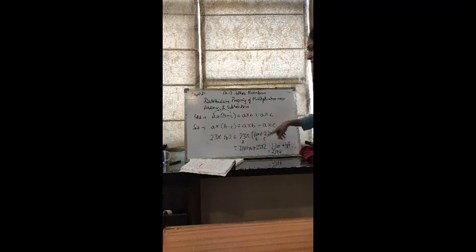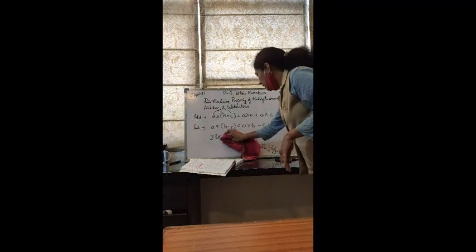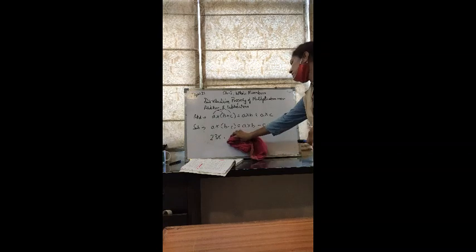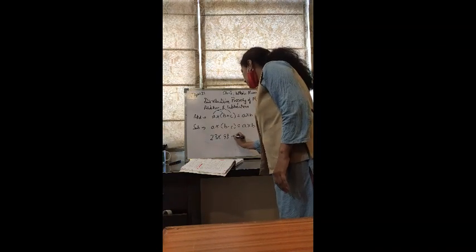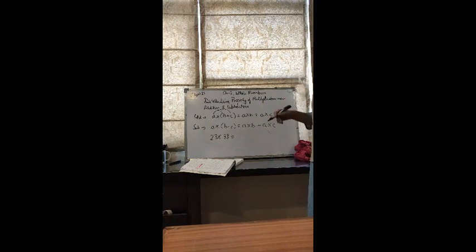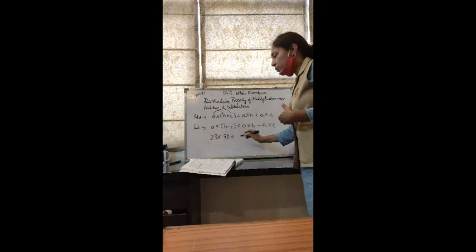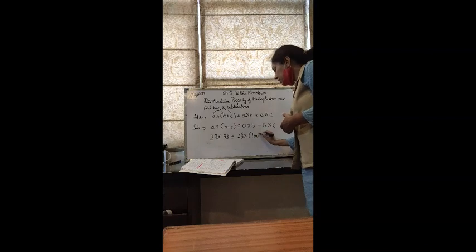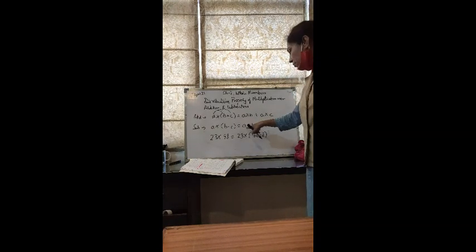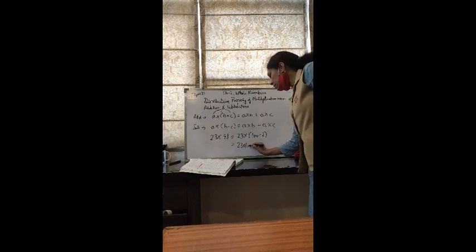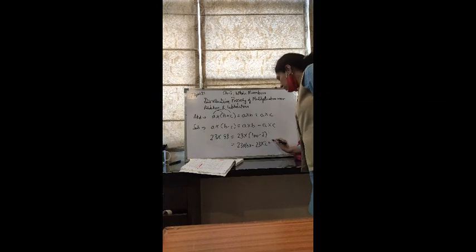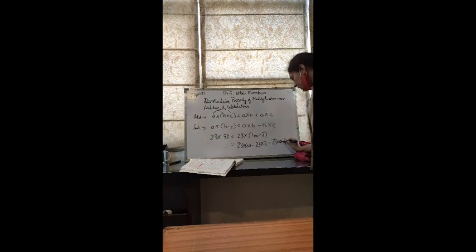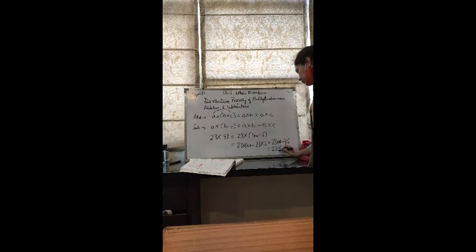Now taking the example of subtraction — I am following the same pattern. If I do 23 into 98, you will say again it is a complex calculation. But now we use this property: 23 into (100 minus 2), because 100 minus 2 is nothing but 98. Here a is 23, b is 100, and c is 2. So we multiply 23 into 100 minus 23 into 2, which gives 2300 minus 46.